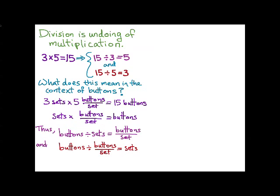And the second one is buttons divided by buttons per set is equal to sets. And this one is perhaps a little less obvious. But if you're familiar with the division of fractions algorithm where you invert and multiply, you should be able to convince yourself that this makes sense.